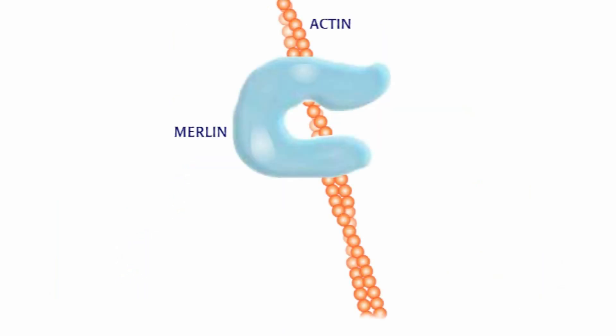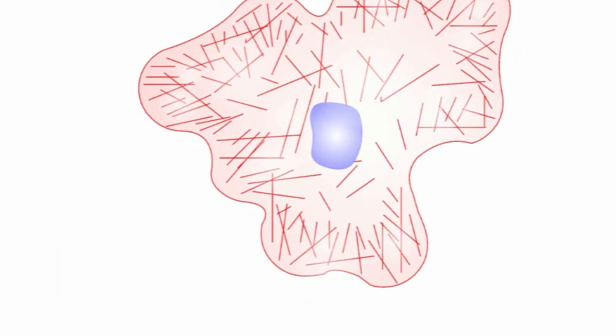Merlin is also related to the ERM family of proteins, which link proteins in the cell membrane to the cytoskeleton. The cytoskeleton is the internal framework of the cell. Cytoskeletal components like actin are important for cell growth and movement.